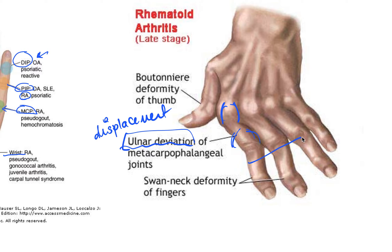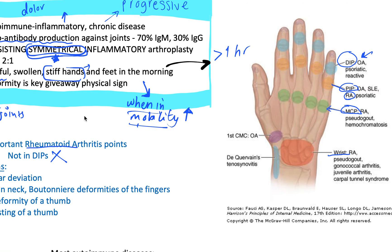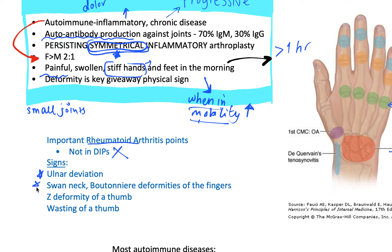The displacement of the fingers is in the direction towards the little finger — remember, the radius is on the side of the thumb and the ulnar is on the side of the little finger. So ulnar deviation, also known as ulnar shift, means the fingers shift towards the little finger. You also have swan neck deformity, boutonniere deformity of the fingers, Z deformity of the thumb, and wasting of the thumb.